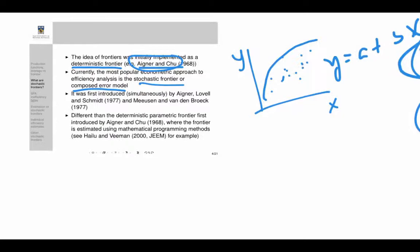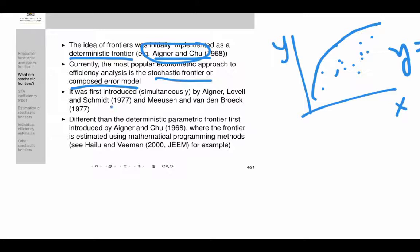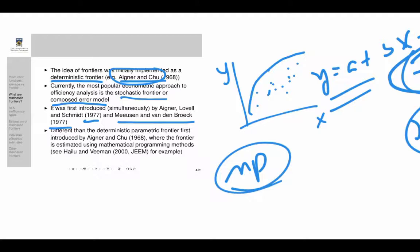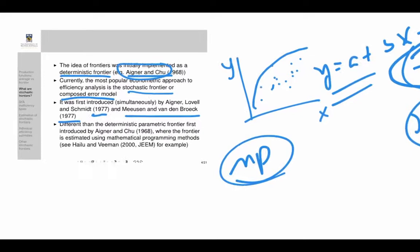This composite error was first introduced by Aigner, Lovell, and Schmidt in 1977, with the same idea introduced simultaneously by others — that's how SFA was born. The two approaches, deterministic and stochastic, differ not only in how they incorporate errors but also in how they are estimated. The deterministic one can be estimated using mathematical programming like linear or non-linear programming, whereas the stochastic frontier requires econometric estimation such as maximum likelihood.